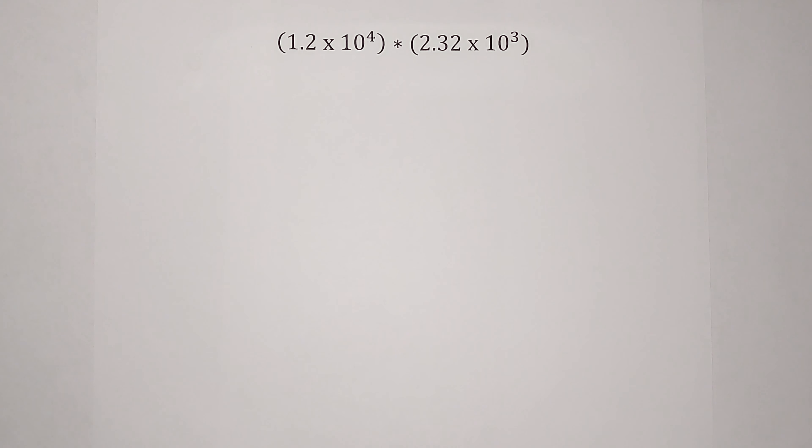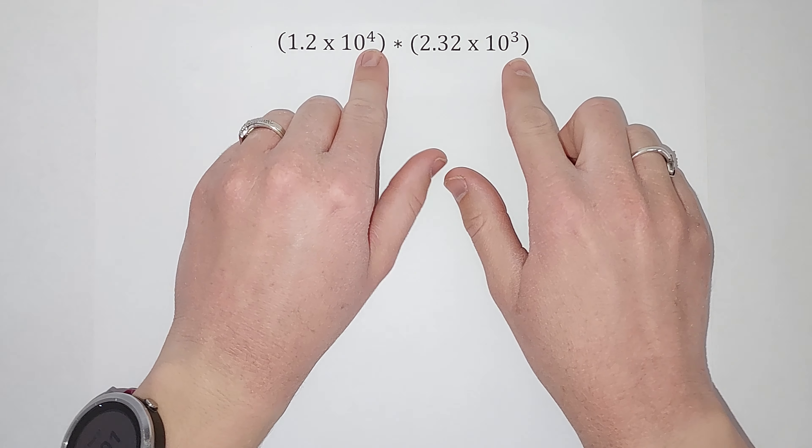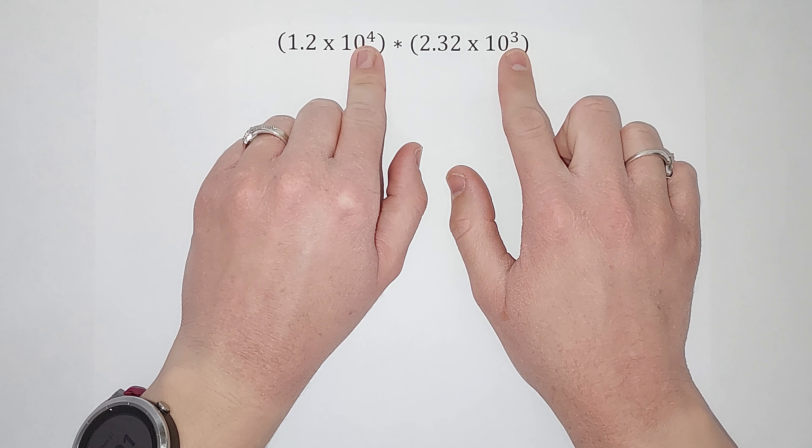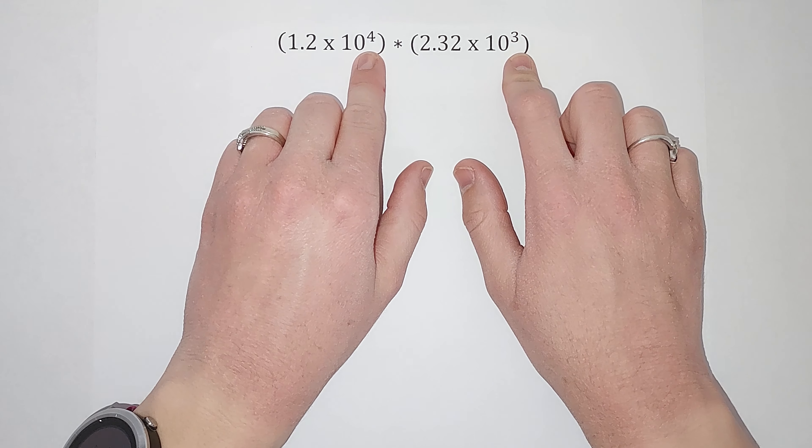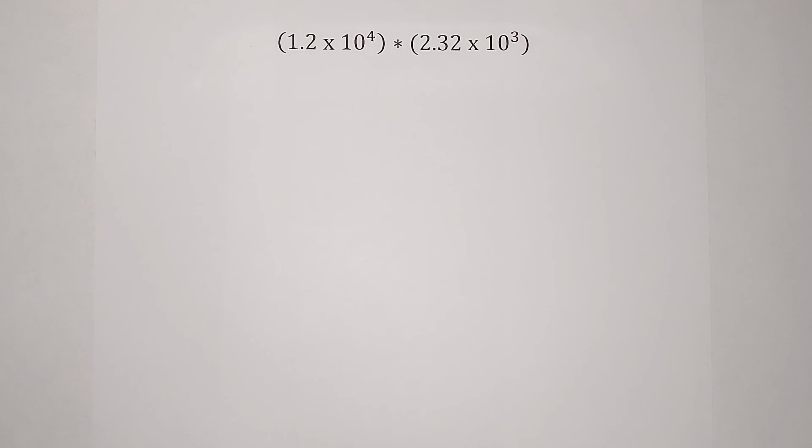Okay, good news. When we multiply numbers in scientific notation, our exponents don't have to be the same. When you add and subtract these, you want your exponents to be the same. When you multiply them, you don't have to worry about it.